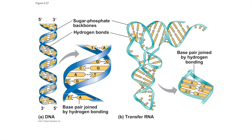RNA is a single-stranded molecule that sometimes will base pair within that single strand — A with U and C with G — to produce a molecule like transfer RNA, which maybe isn't as aesthetic as DNA. It kind of looks like a duct tape disaster, but it has a beauty in its functionality that we literally just can't live without.